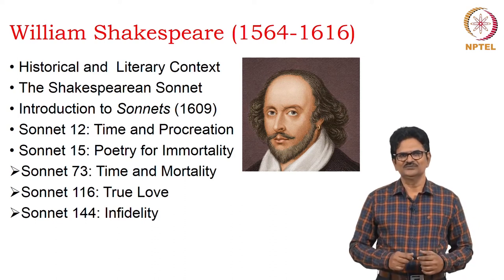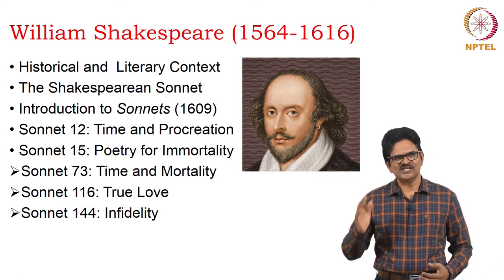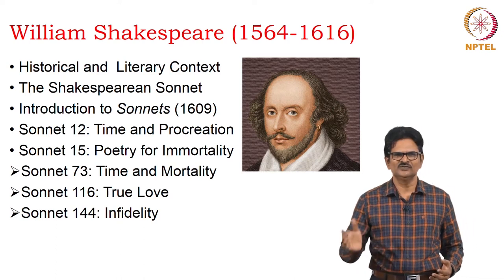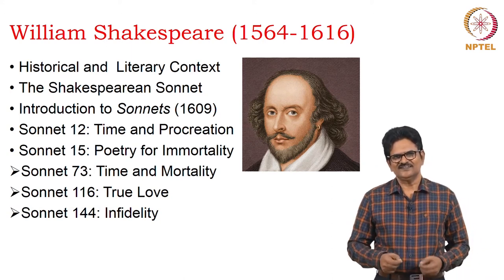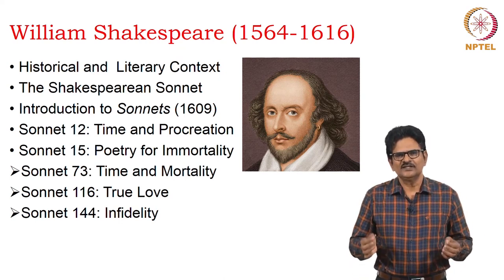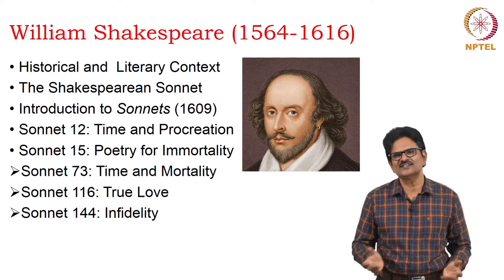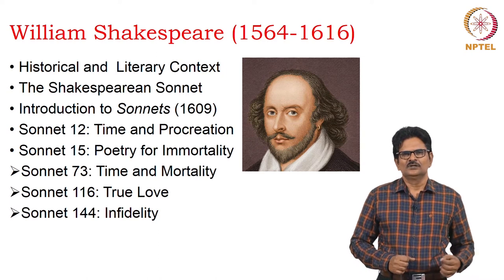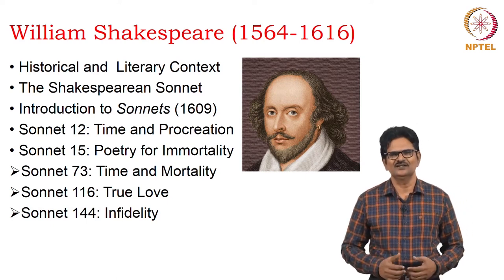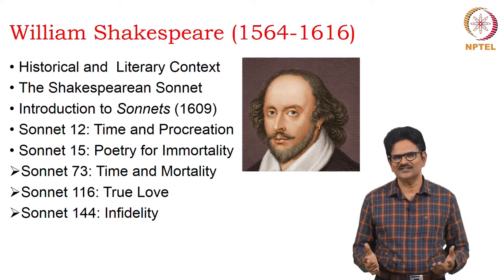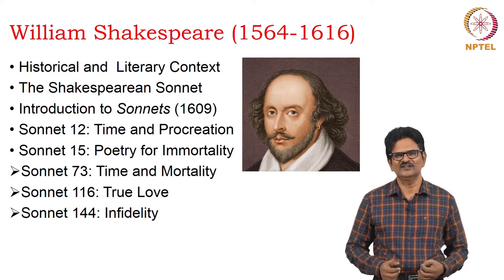We have five poems for you. The first two we will just read for the sake of joy. Sonnet 12 deals with time and procreation. Sonnet 15 is concerned with poetry for immortality. Sonnet 73 discusses time and mortality — it deals with the theme of death profoundly. Sonnet 116 defines true love, which is one of the fantastic poems from Shakespeare. Next, we will see Sonnet 144, which deals with infidelity and betrayal in human relationships. Shakespeare is great because he was able to deal with various emotions of human beings in such short sonnets, in his sonnet sequence called Sonnets.